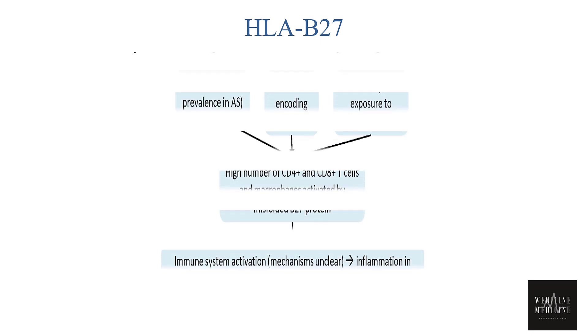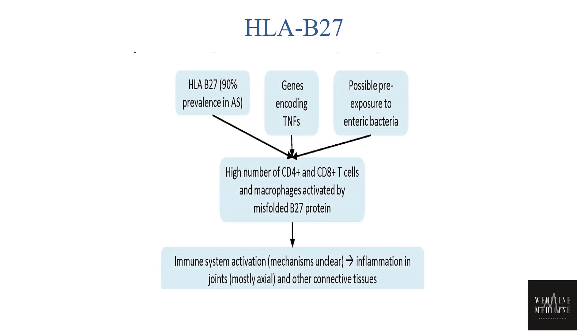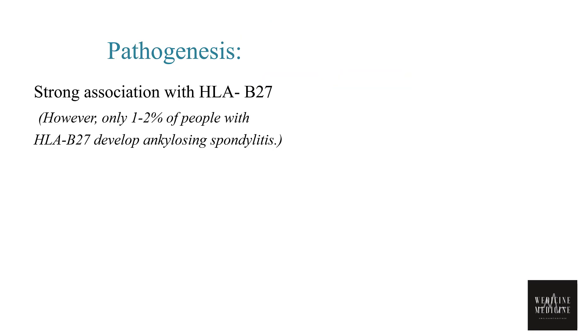HLA is a gene complex situated on chromosome 6 that codes for cell surface proteins responsible for regulating the immune system in the human body. In HLA B27 positive individuals, the misfolded B27 protein leads to activation of T cells and macrophages, resulting in immune system activation and inflammation in joints and other connective tissues.